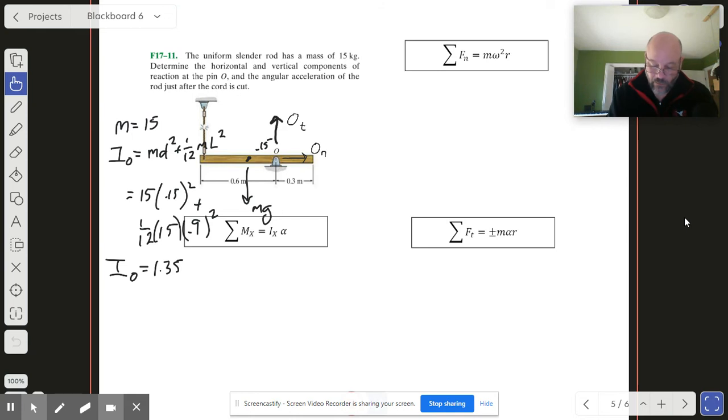Now let's go ahead and use our equation. We're going to set it up about the pivot point there. As we look at that, our force O_t doesn't give us a moment, the force O_n doesn't give us a moment, mg is going to give us a moment that will be positive.